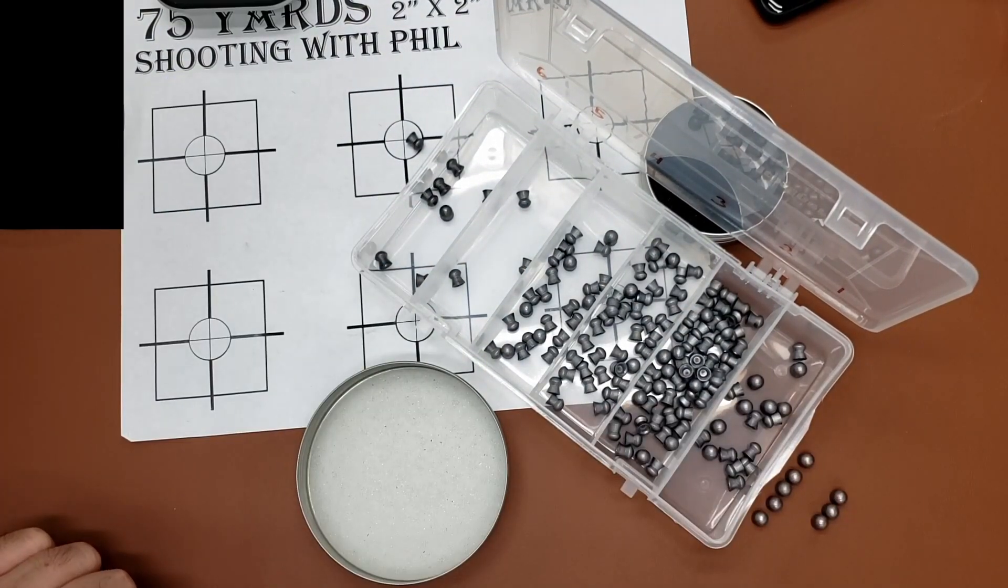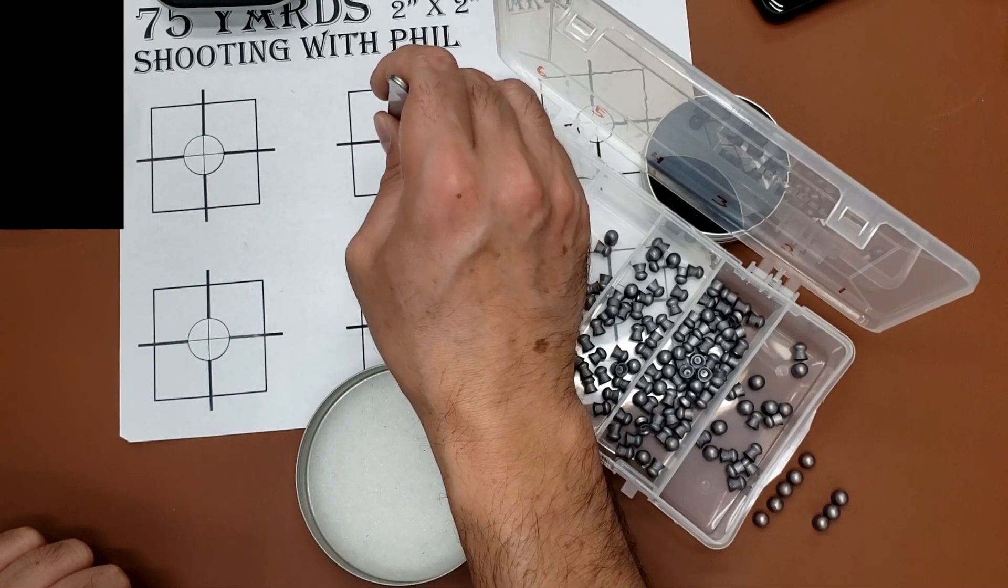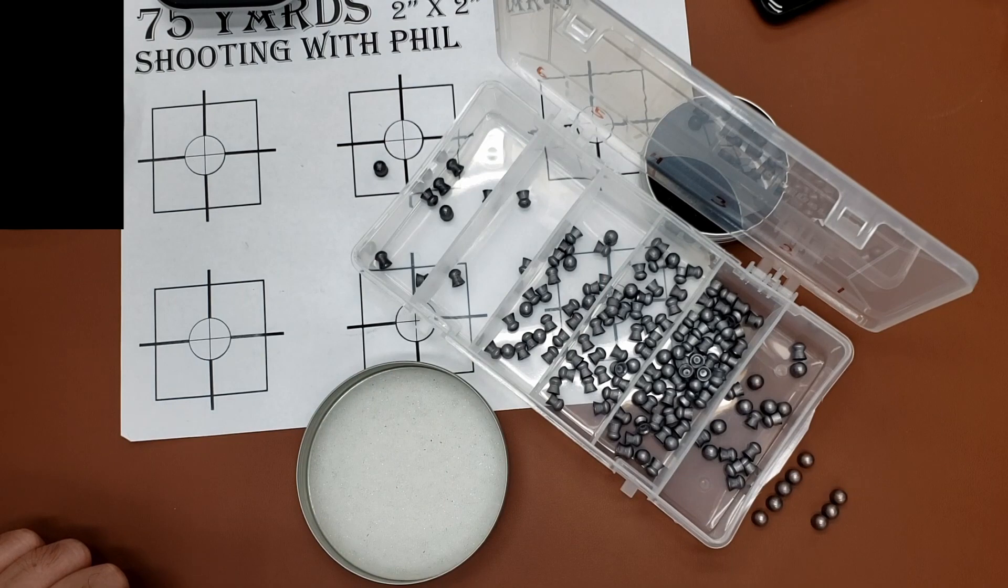We count them up. The heaviest pellet is this one at 25.74, and the lightest pellet is one of these three at 24.89. Total spread: 0.85 of a grain, almost one grain.